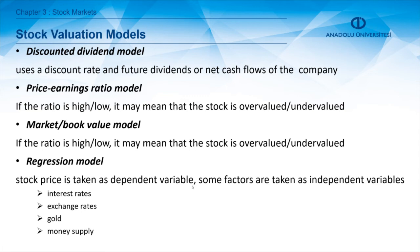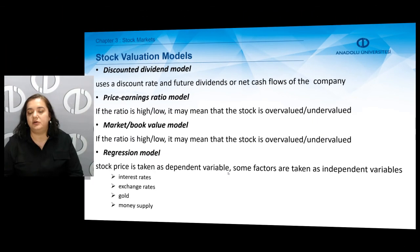Taking those ratios as a benchmark, we can make an estimate of the stock value. If the price-earnings ratio of a company is high, it may mean that the stock is overvalued. On the contrary, if the price-earnings ratio is low, we can say that the stock is undervalued. The market-to-book value has a similar logic and also gives us an indication about the overvaluation or undervaluation of a stock.